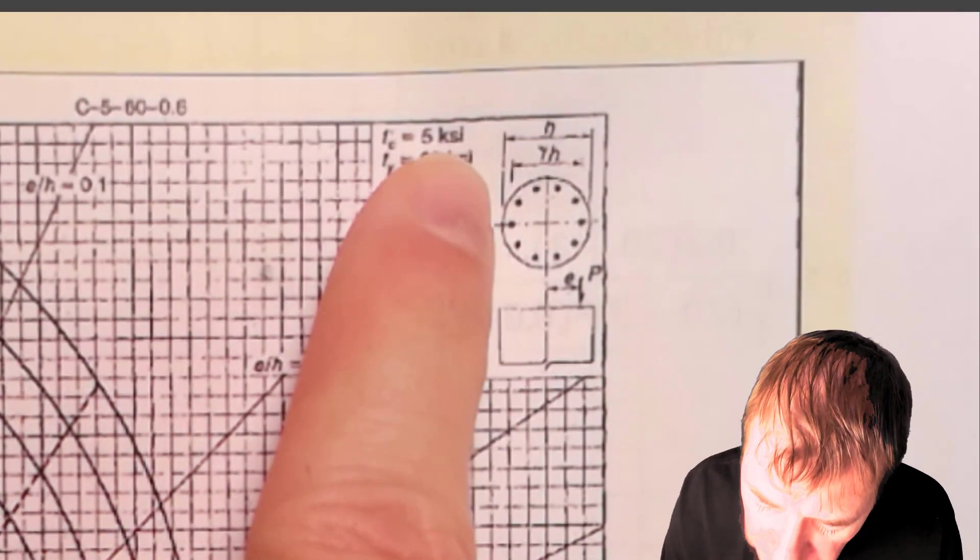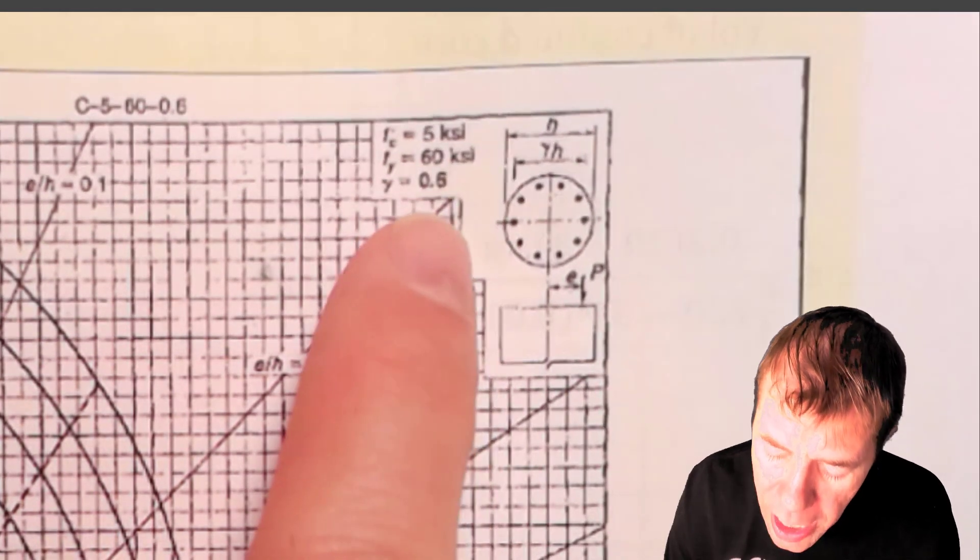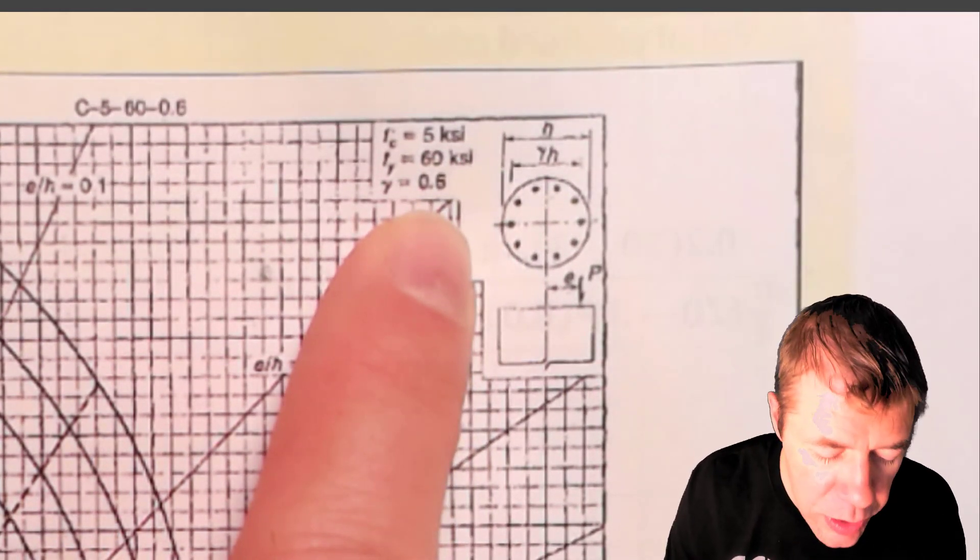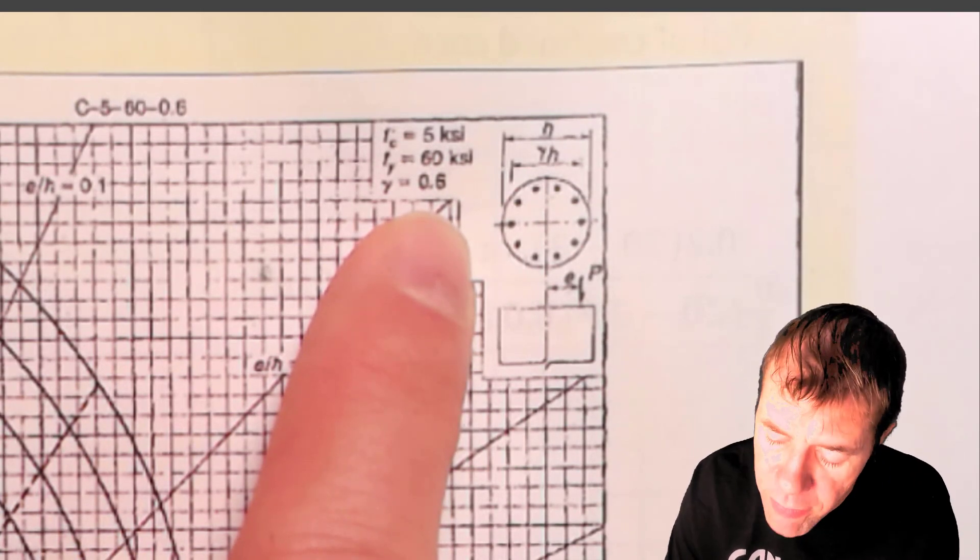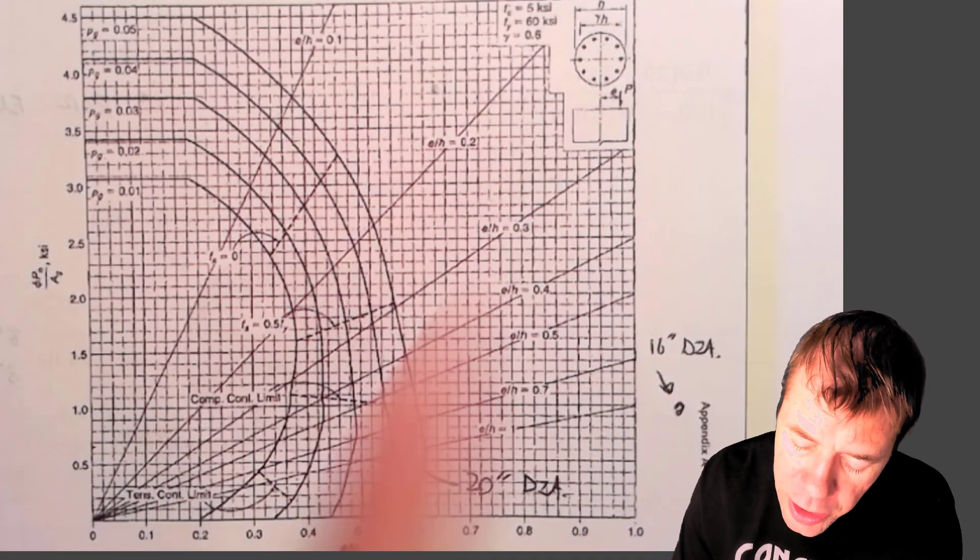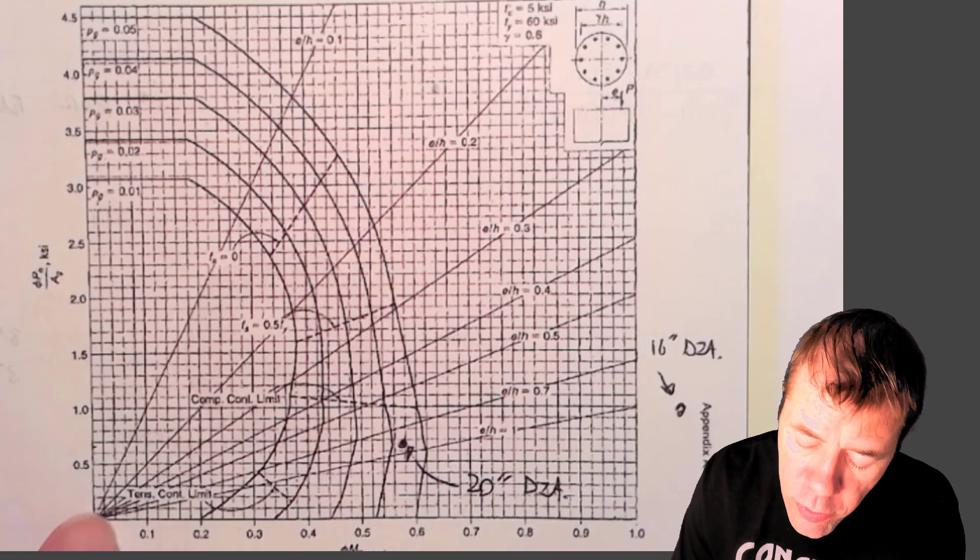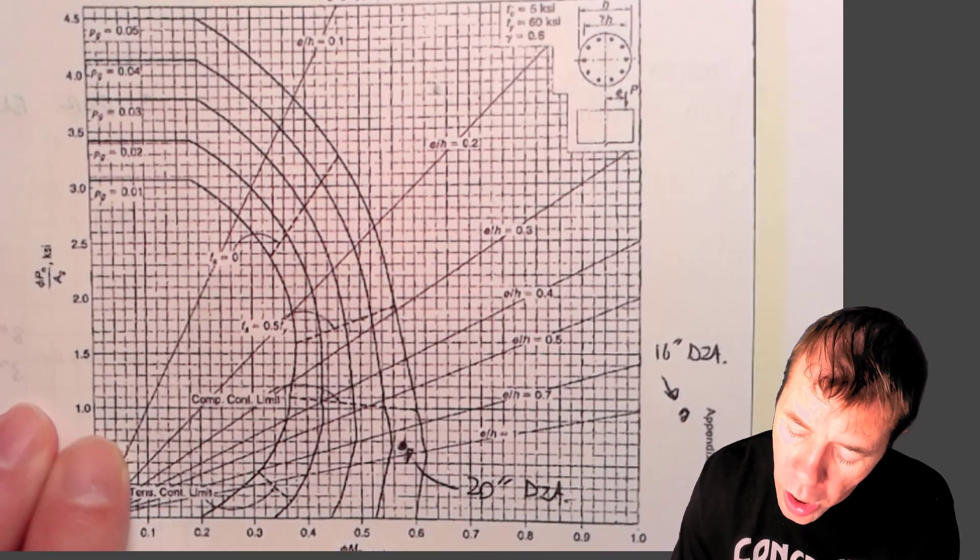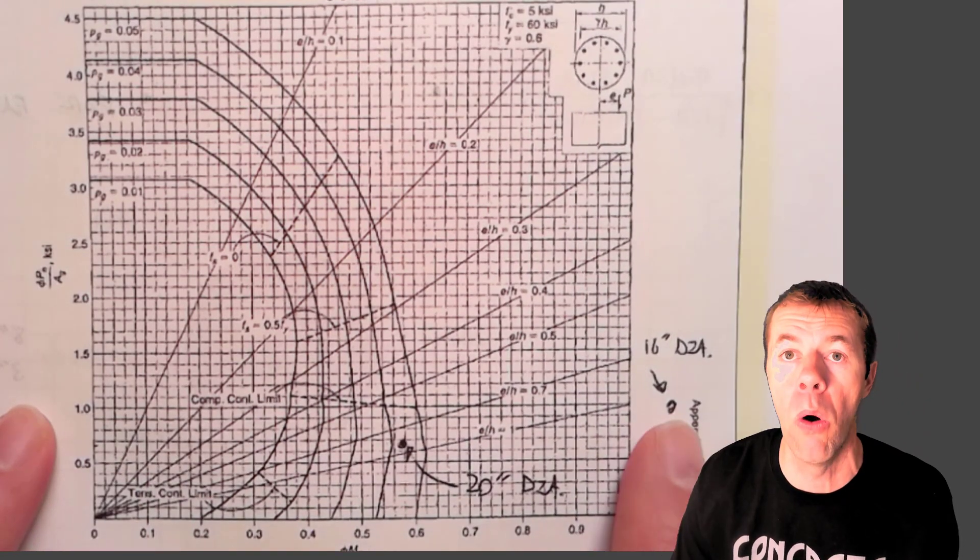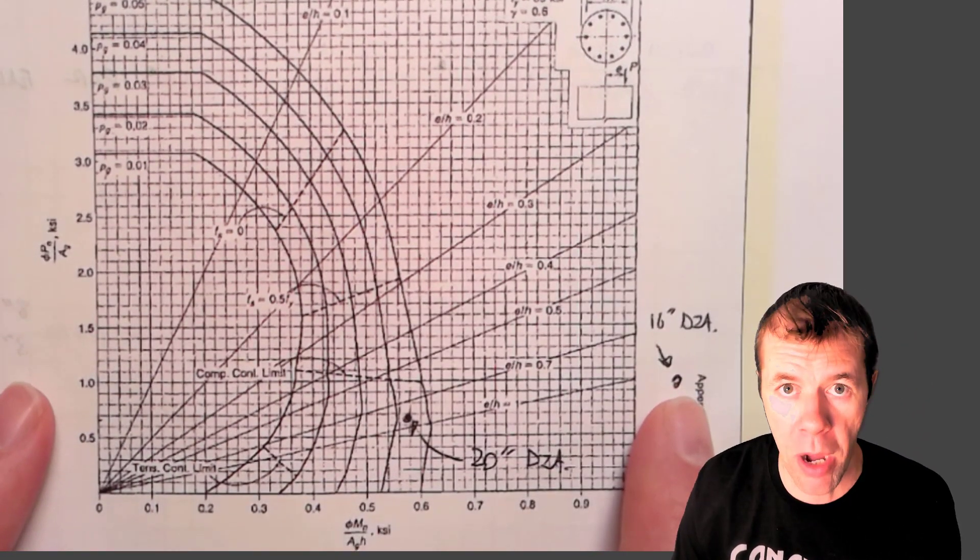But this one has 5 KSI concrete. It has a gamma of 0.6. We calculated a gamma of 0.66, so this is conservative. This is great. Everything is awesome. I come in here with my y value of about 1, and I come in with my x value of also about 1, and oh, no. Oh, no, I'm off the chart.